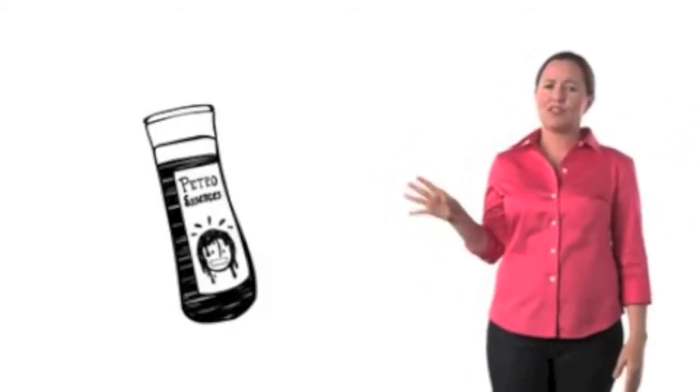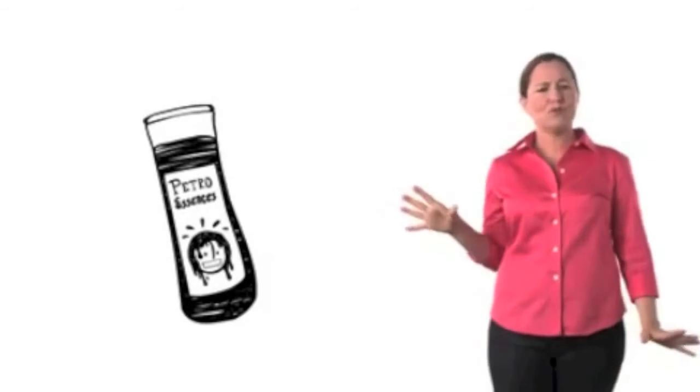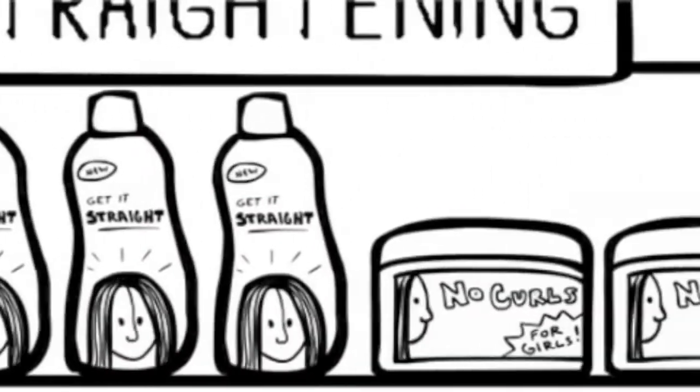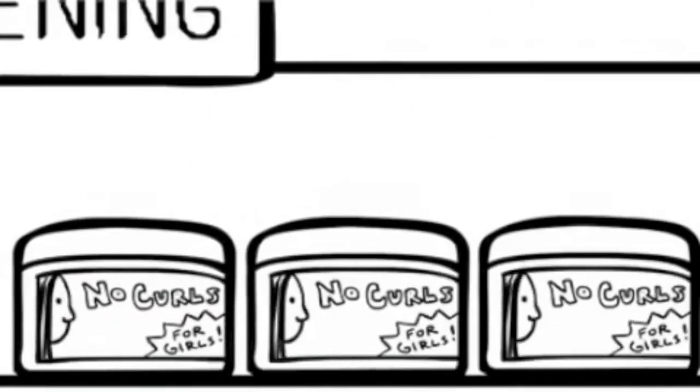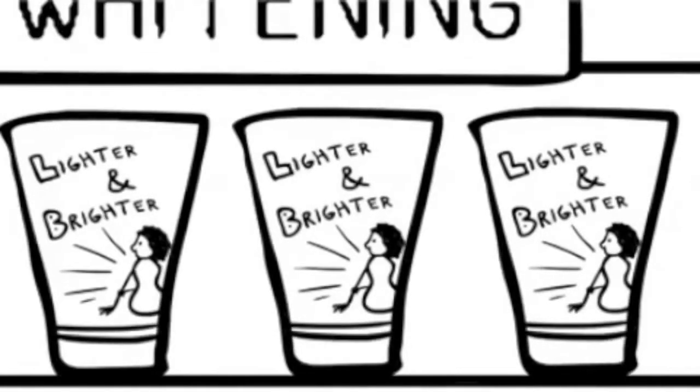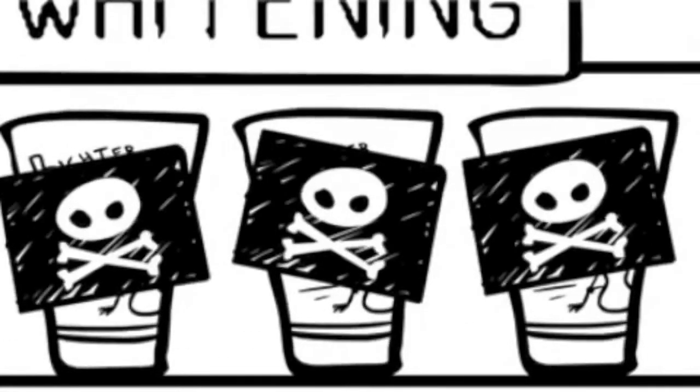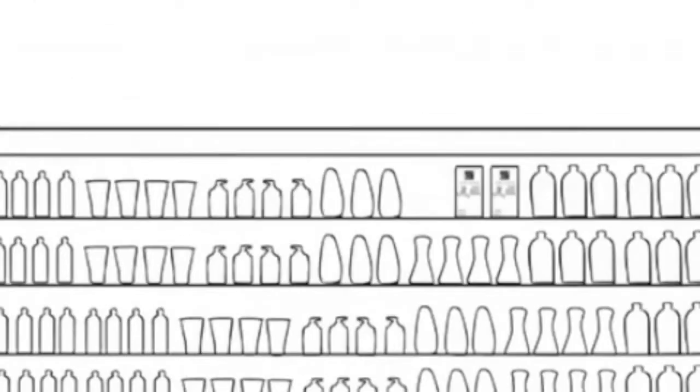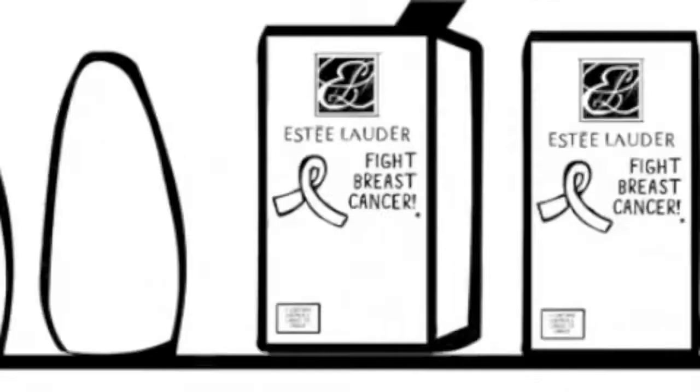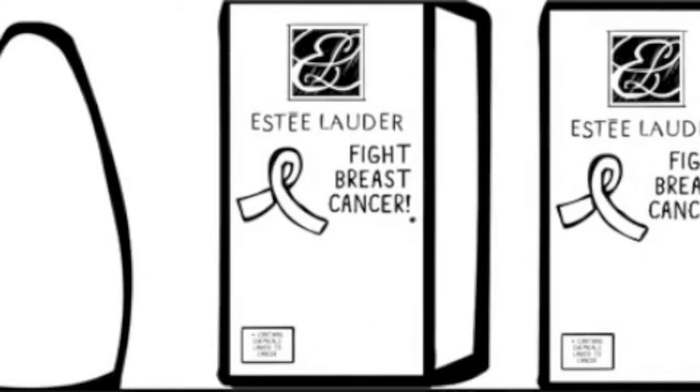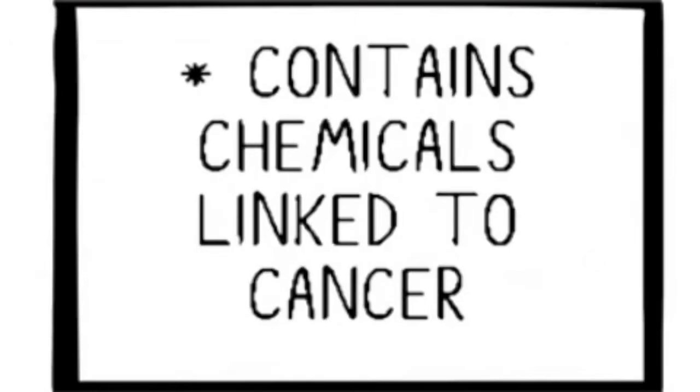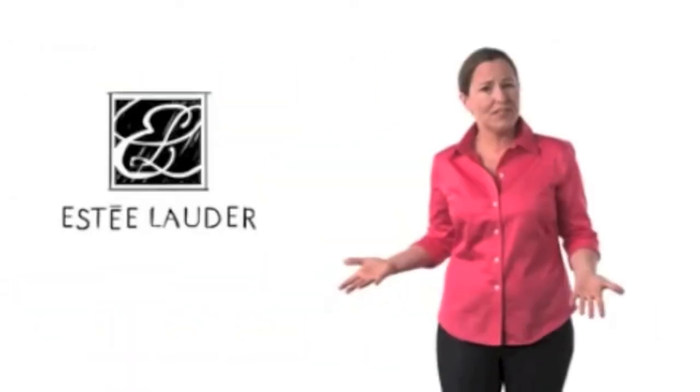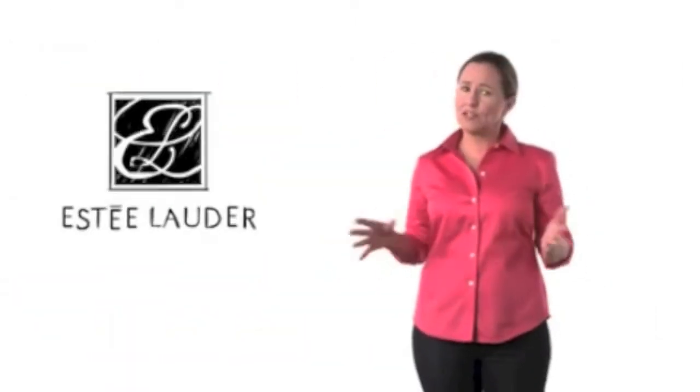I mean, can you imagine a top seller called Petro Essences? Gross. What's even nastier are hair relaxers marketed to five-year-olds and skin whitening creams. These are super toxic, both in their ingredients and in the message they send about what beauty is. Oh, here's Estee Lauder offering me a chance to help find a cure for breast cancer. That's nice, but wait, they're also using chemicals linked to cancer. Don't you think the best way for Estee Lauder to fight cancer is to stop using those chemicals in the first place?